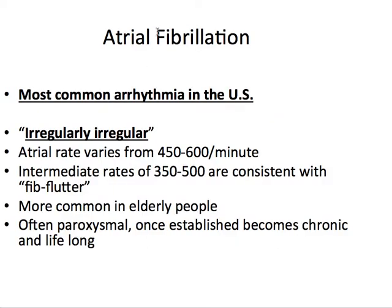The more common thing we're going to talk about is AFib. It's the most common arrhythmia in the United States. The board trademark name is irregularly irregular. Atrial rate is 450 to 600 per minute, compared to flutter which is around 300. It's most common in elderly patients, and it can be paroxysmal, which means it kind of comes and goes. However, studies say the longer a patient is in constant AFib, the less likely you're going to get them back into a normal sinus rhythm. Once it's established it becomes chronic, requiring chronic treatments.